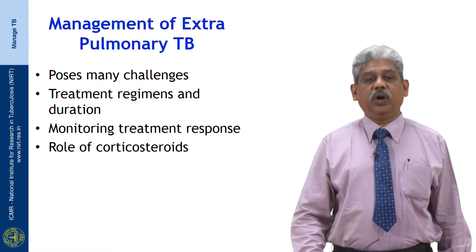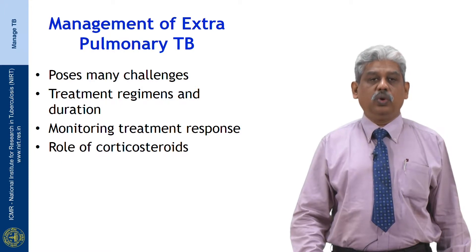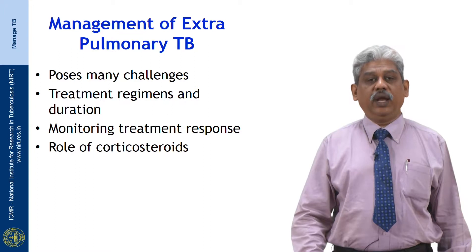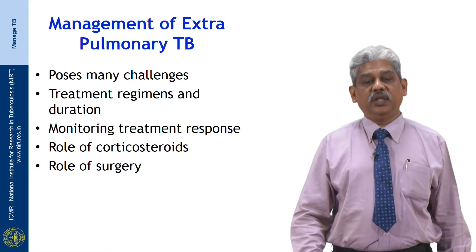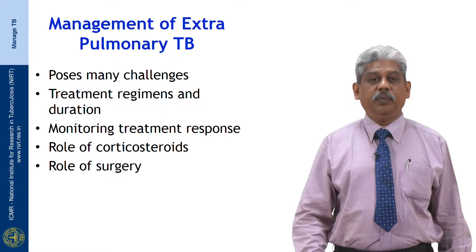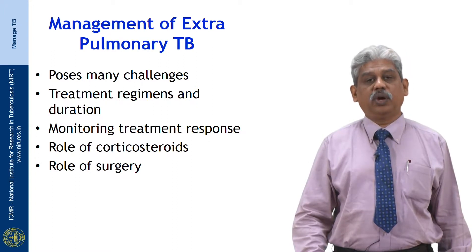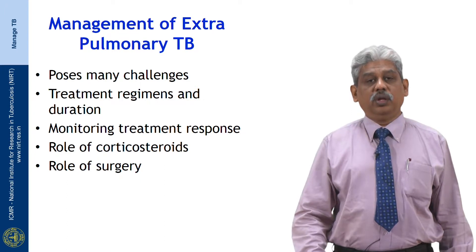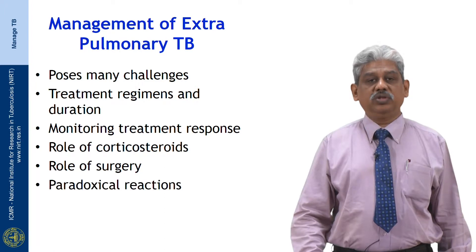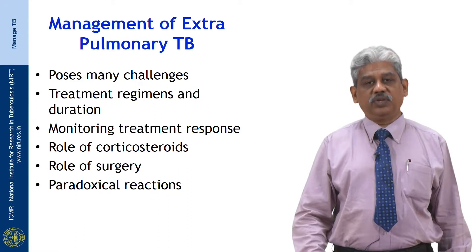The next important thing is the role of steroids. In pulmonary TB we do not have much role for steroids, but in extrapulmonary TB there are some patients who will do well with steroid therapy. The fifth important thing is surgery — most patients with extrapulmonary TB might develop complications during therapy or, as a sequelae, might need surgical management. The most important consideration is paradoxical reaction.